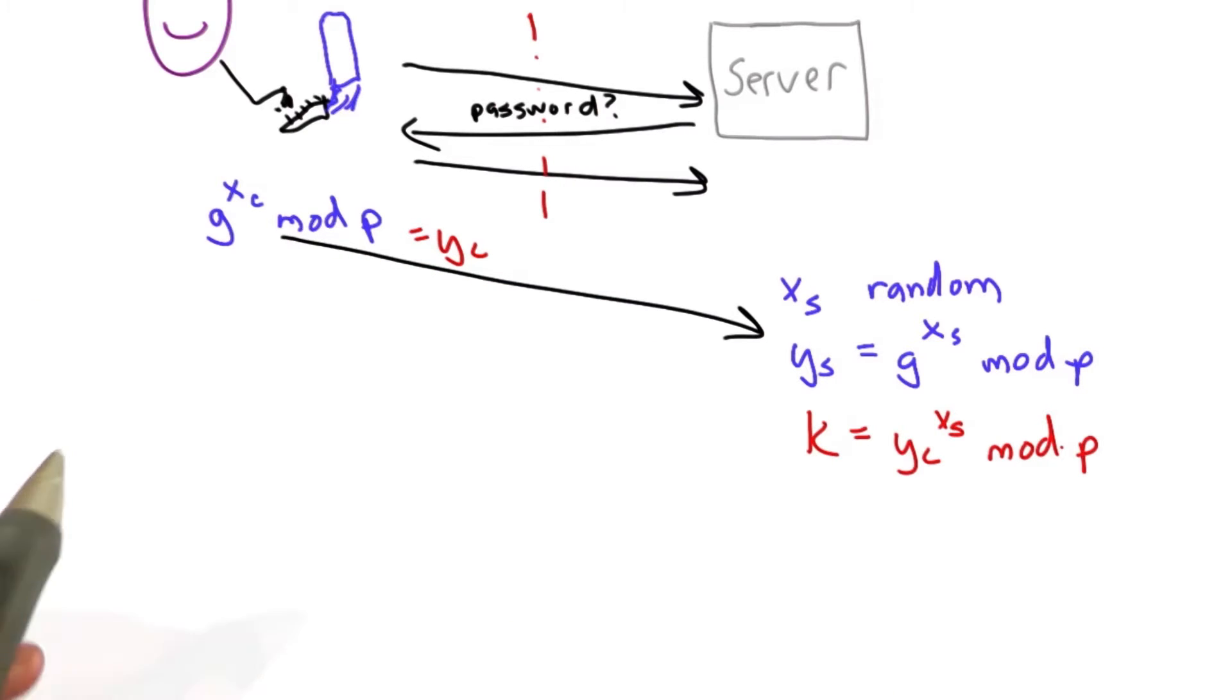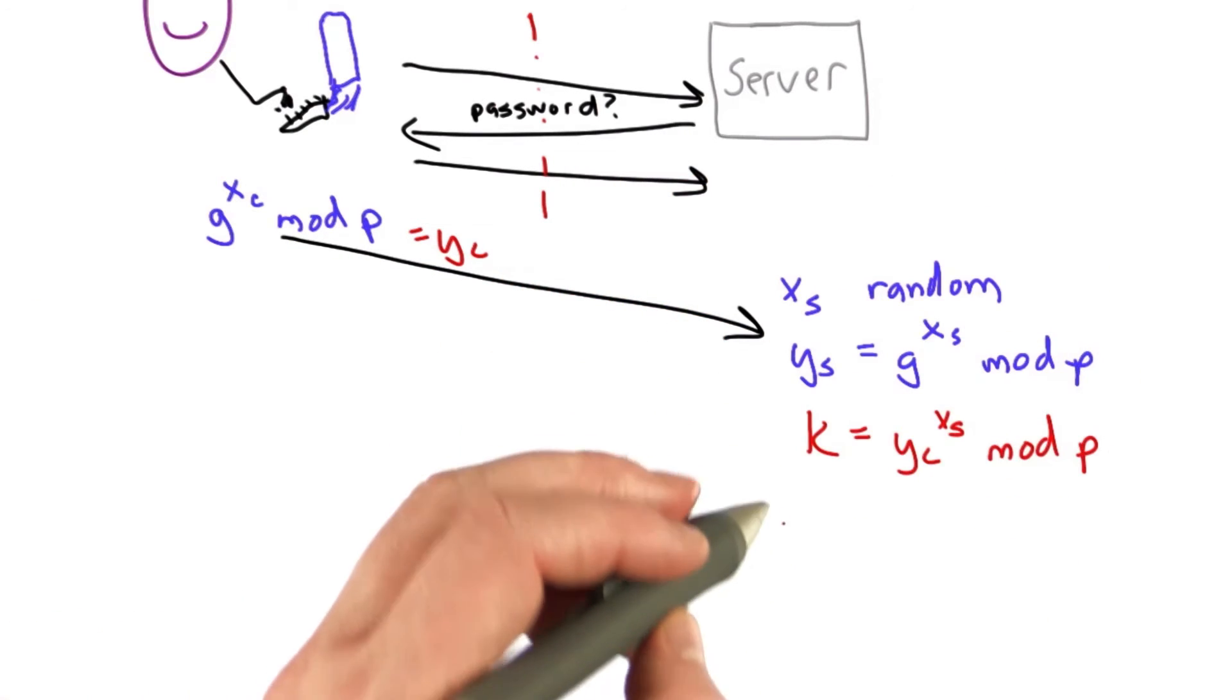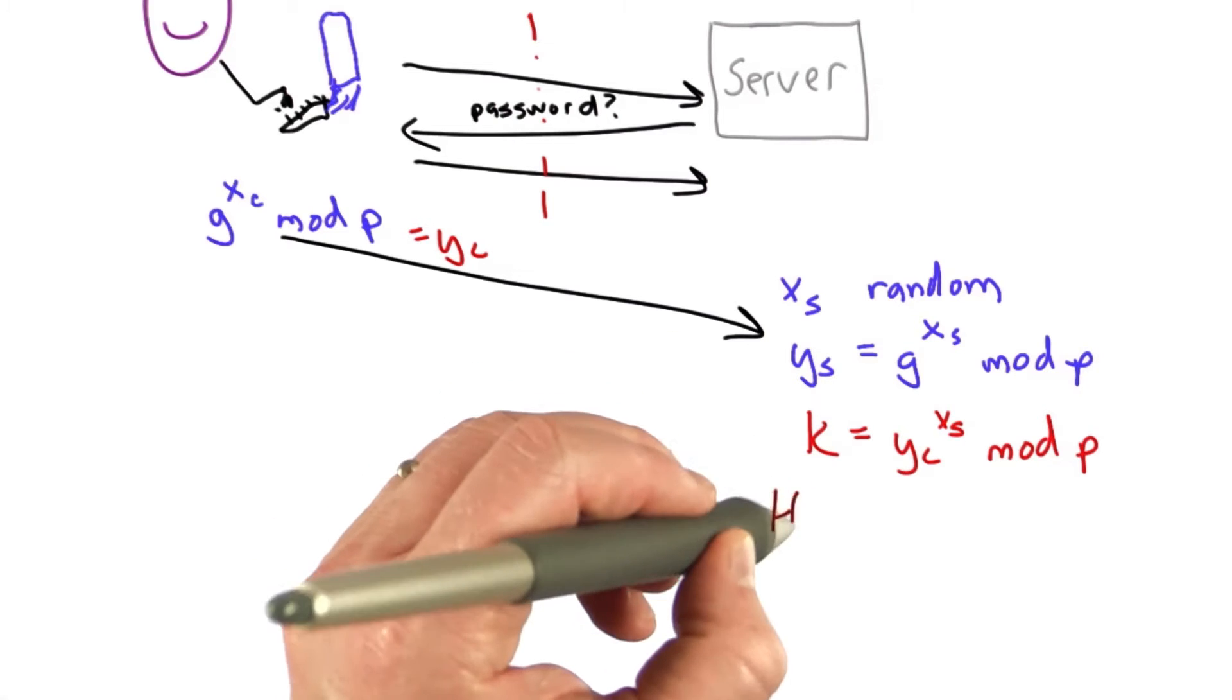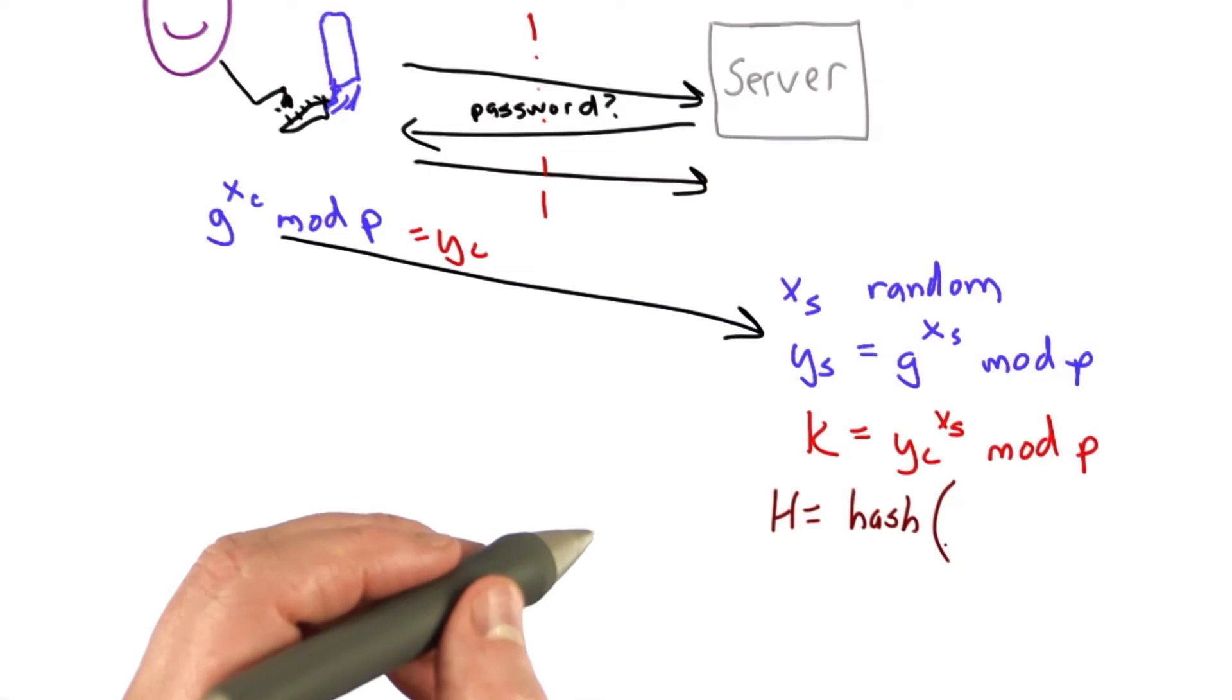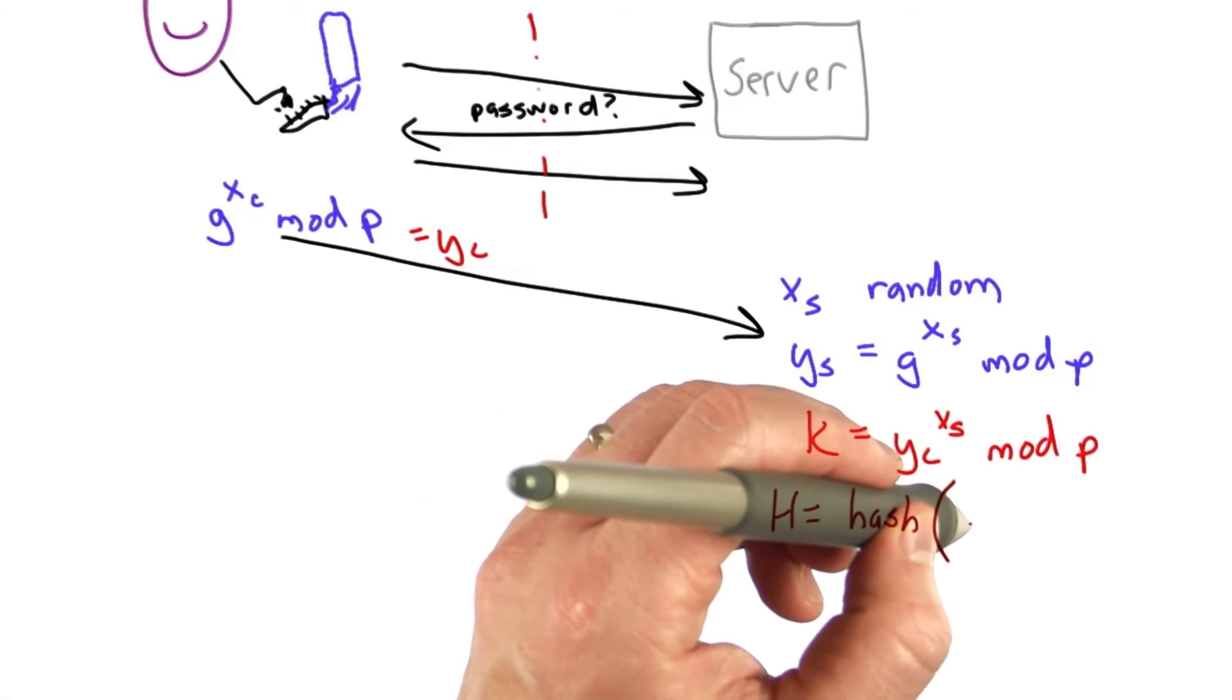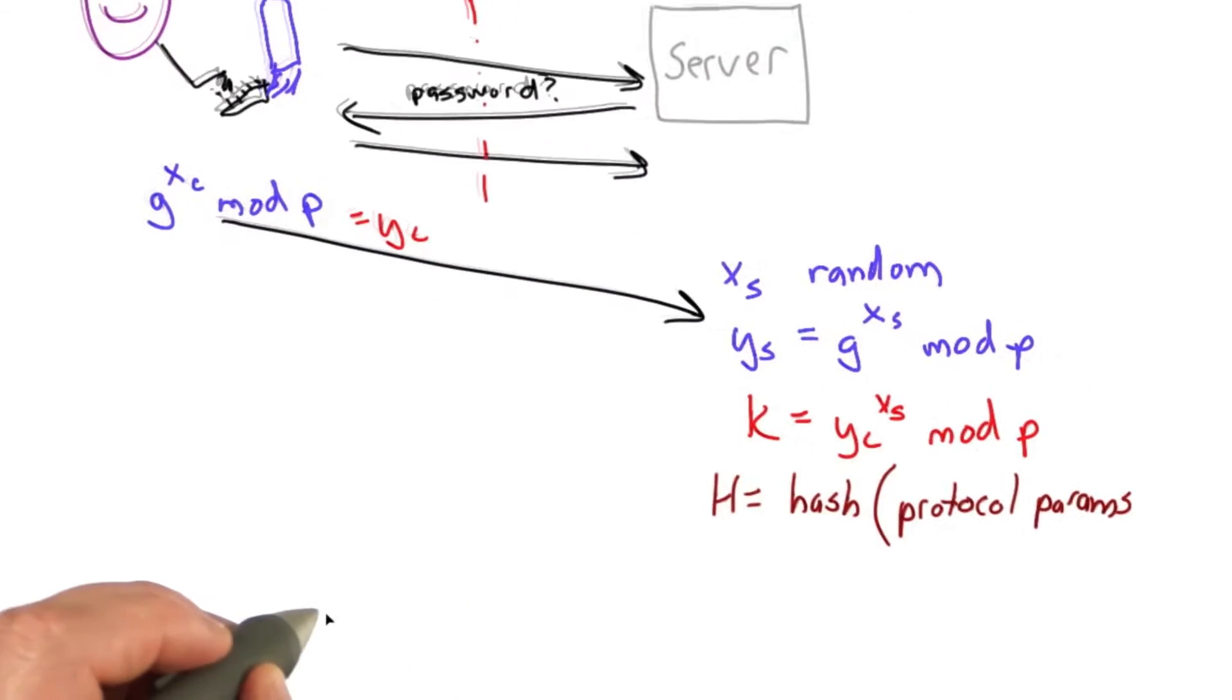The next step is where things get interesting. What the server will compute is a hash, so we'll use some cryptographic hash function. And the inputs to that hash function, first there will be some parameters that identify the protocol.